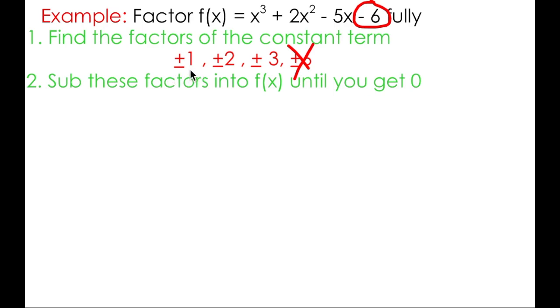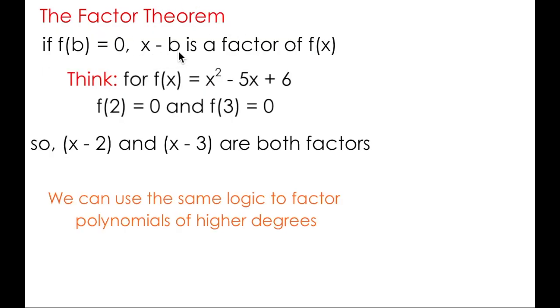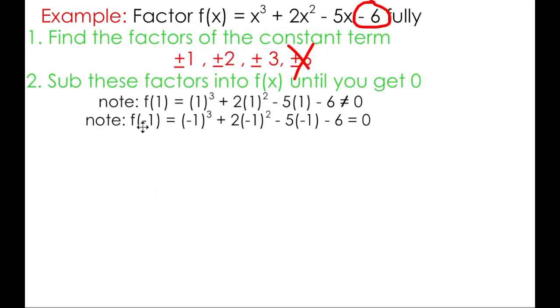I find the most success when I start with 1 and negative 1. For some reason, it seems like this is always the successful option. Now, this requires a pretty good understanding of BEDMAS and can be done very quickly if you're good at mental math. If not, you can use your calculator by simply typing in what you see here. But if I start by subbing in 1, you'll see that I do not get 0. That means that according to the factor theorem, x minus 1 is not a factor. So let's try subbing negative 1 into the function. You can see here, I do get 0. And according to the factor theorem, x plus 1 must be a factor.